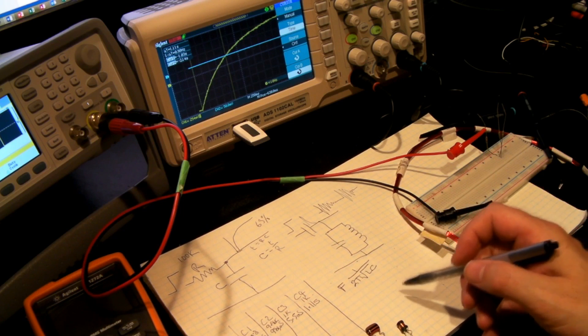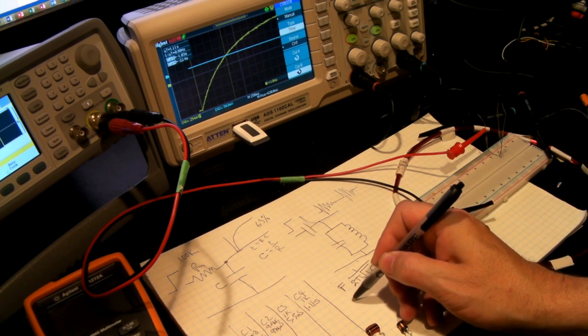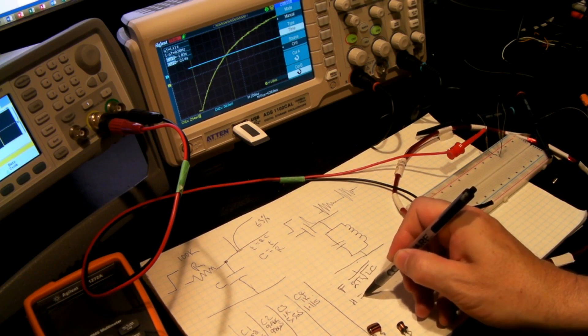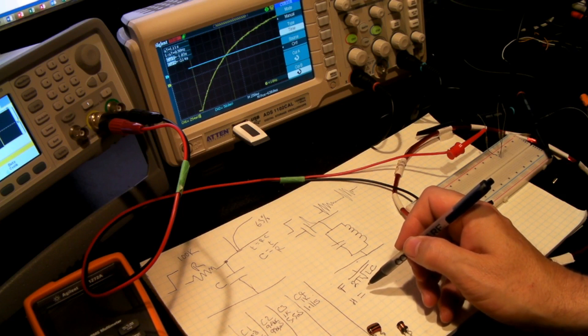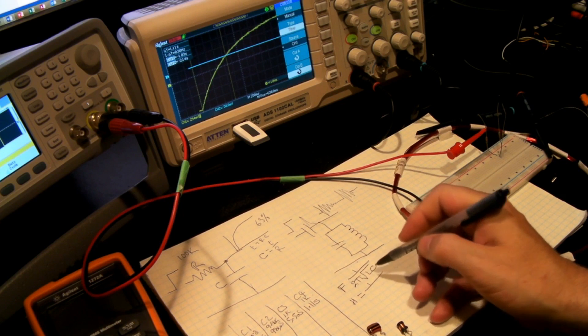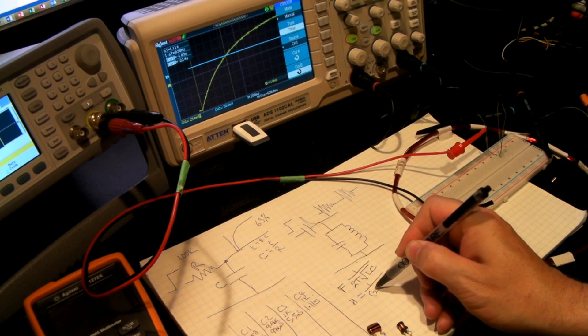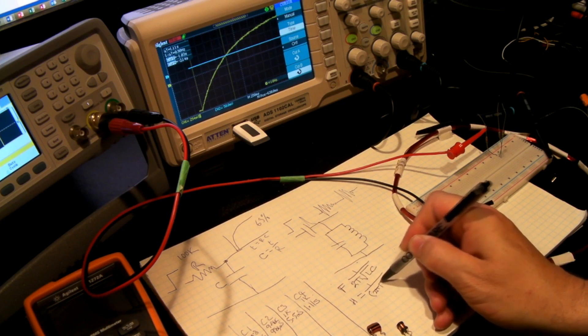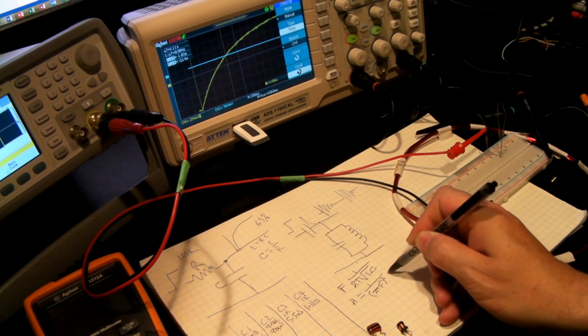Now if we rearrange this formula so that we can pull out the inductance, then what we have is the Henry's equals the 1 over, and it now becomes 2π frequency squared times the capacitance.